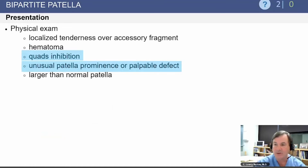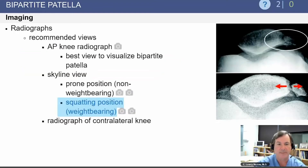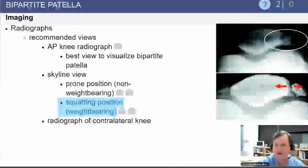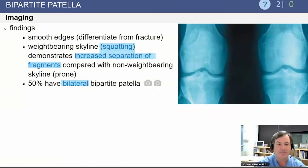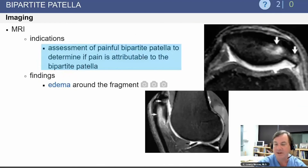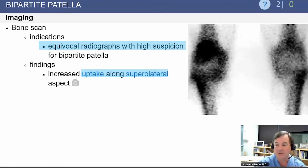On physical examination, there is quadriceps inhibition and tenderness in the area of the bipartite patella. This can be accentuated with a squatted position weight-bearing x-ray, as there is a dynamic pull on the symptomatic fragment. You can see separation of the fragment, and 50 percent will have findings on the opposite knee. If there is concern about injury with separation or damage, MRI may show edema around the area, or you may see increased uptake on a bone scan.